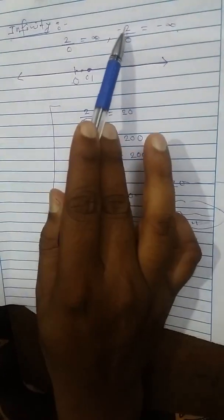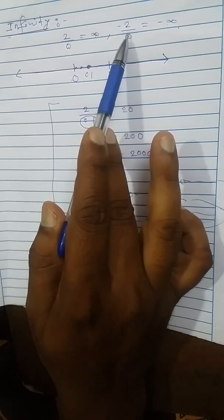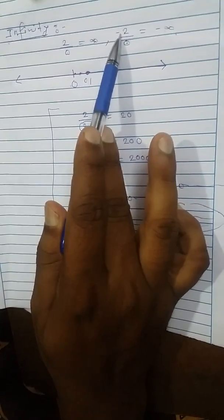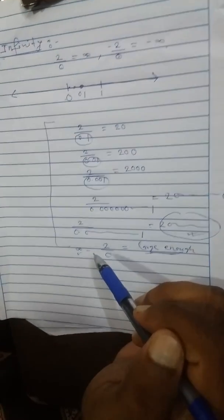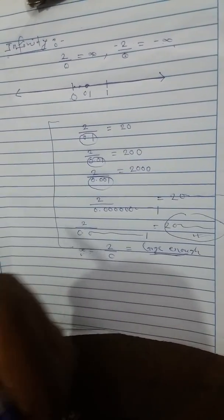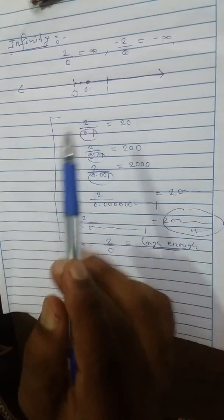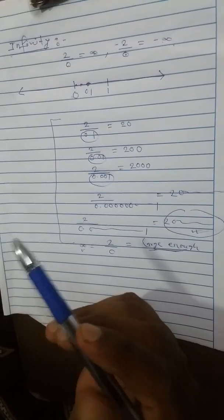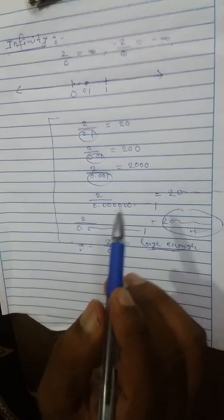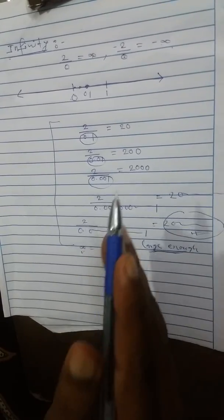Likewise, minus two upon zero is minus infinity, and this one is also enormous using a negative number. So we conclude that plus infinity and minus infinity are huge, non-memorable numbers from that point — you cannot move forward.